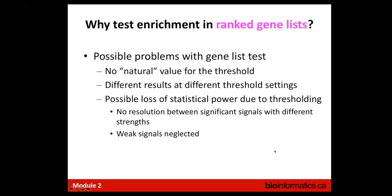Why do we test with a ranked gene list? If we can rank all our genes, this method is always recommended because it avoids arbitrary thresholds. With a defined gene list it is difficult to know where to put the threshold — too stringent and we lose information, too permissive and we include too many false positives. With a ranked list we don't have this issue.